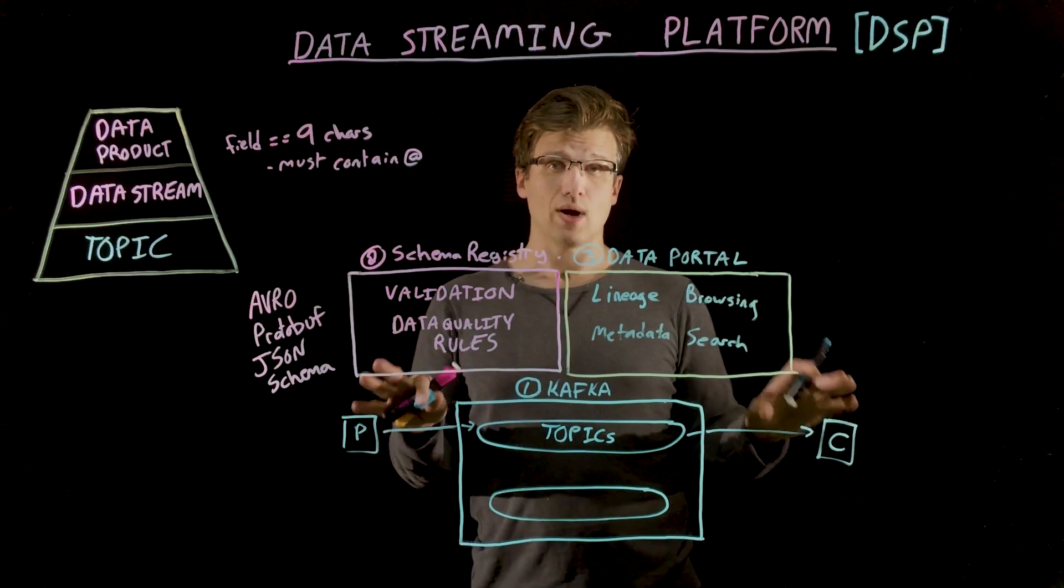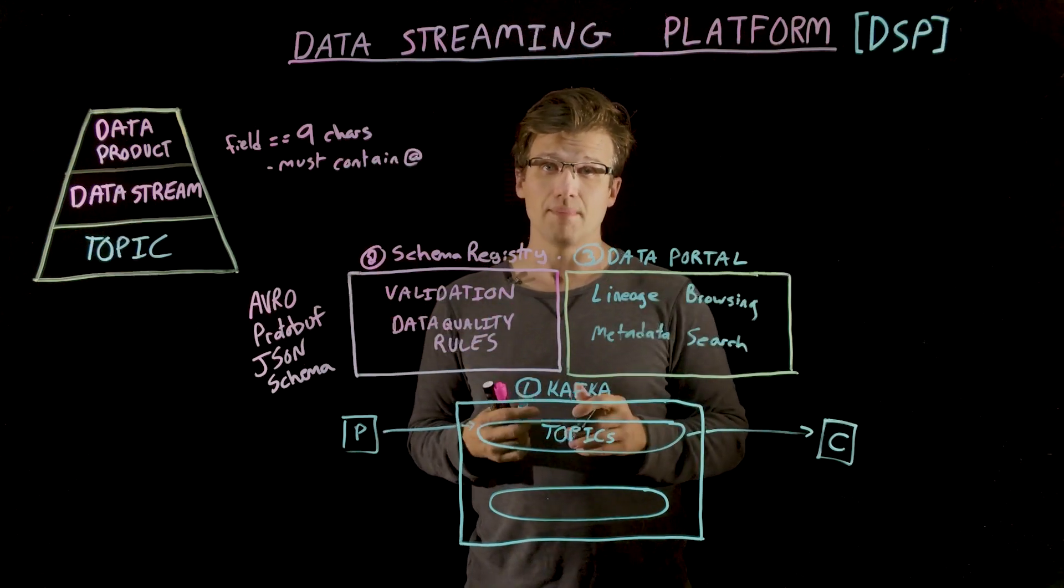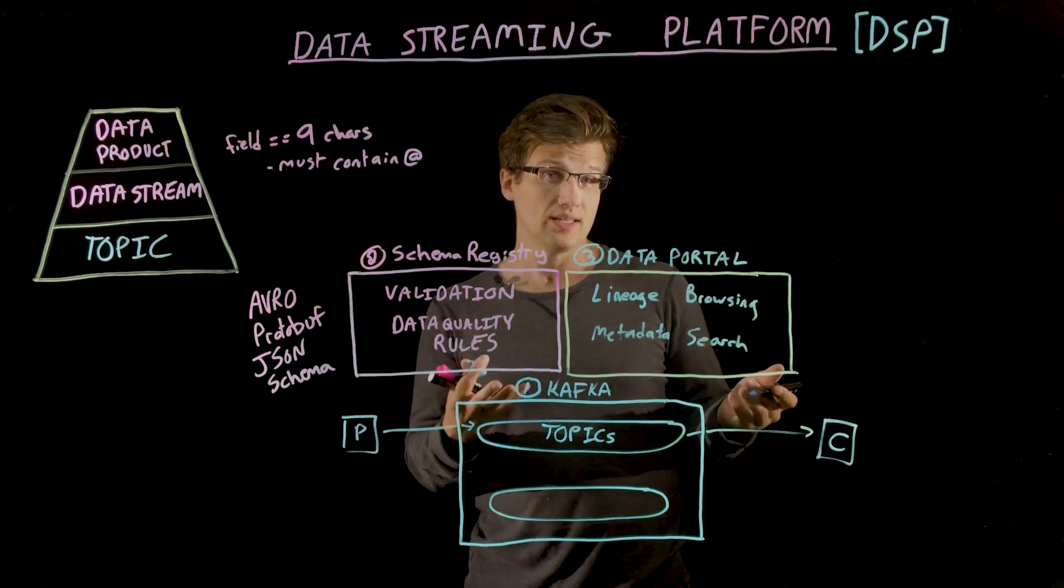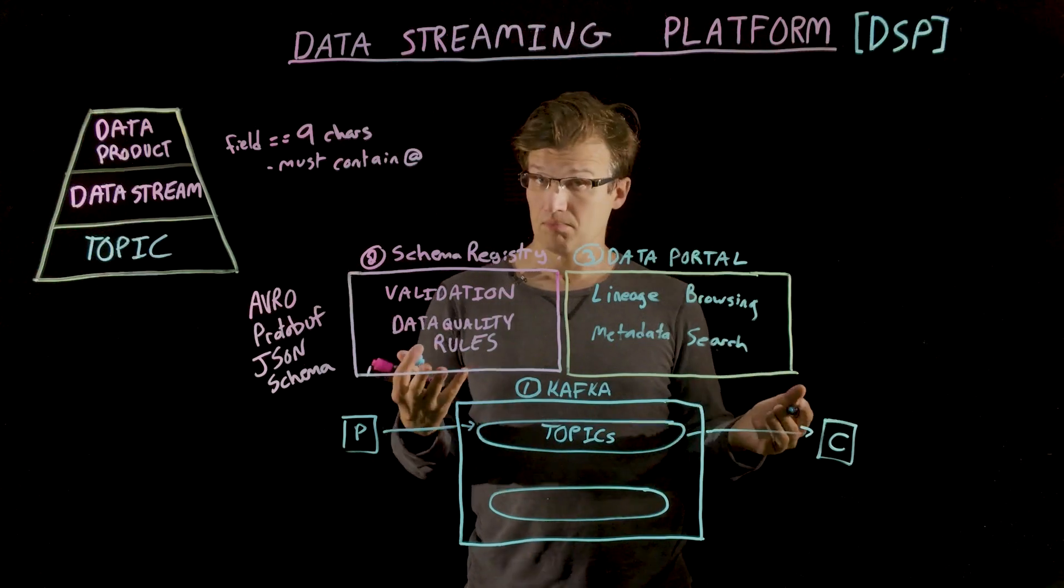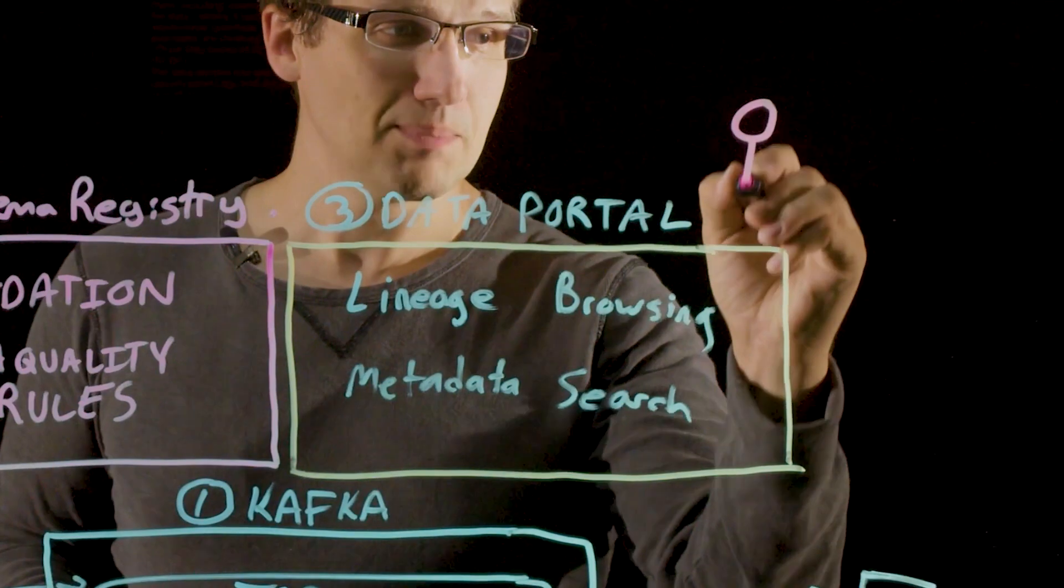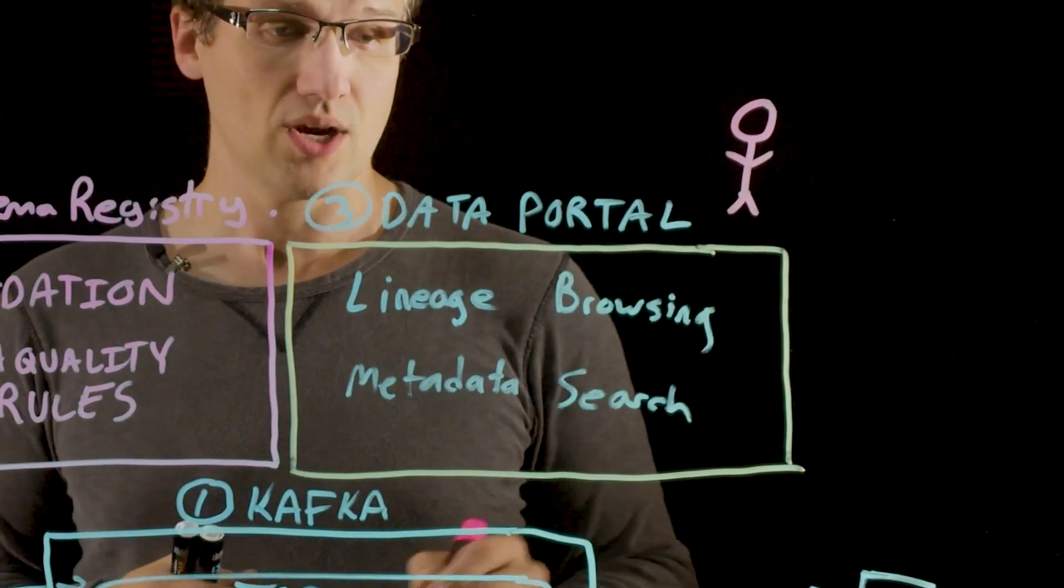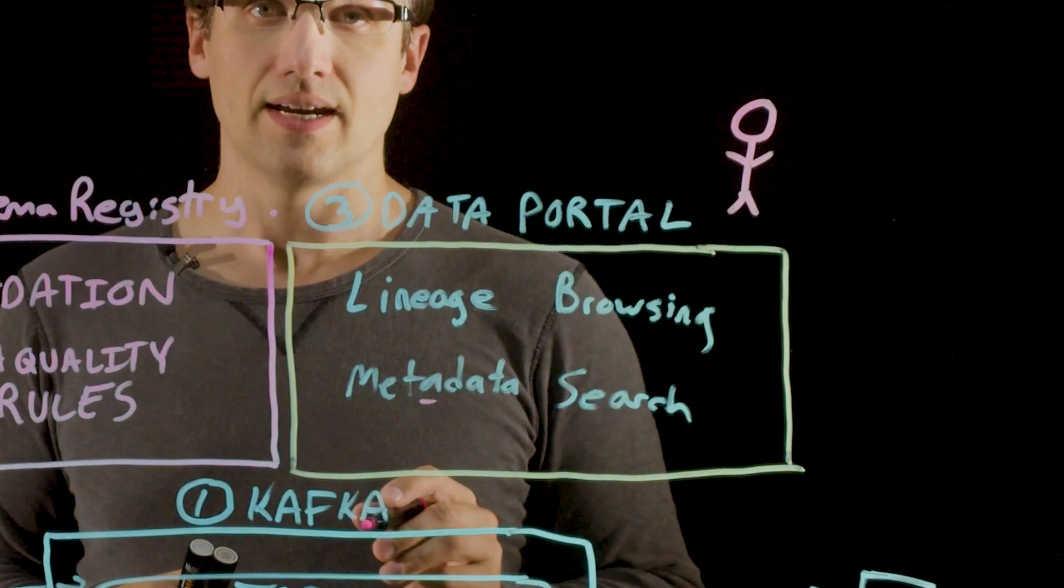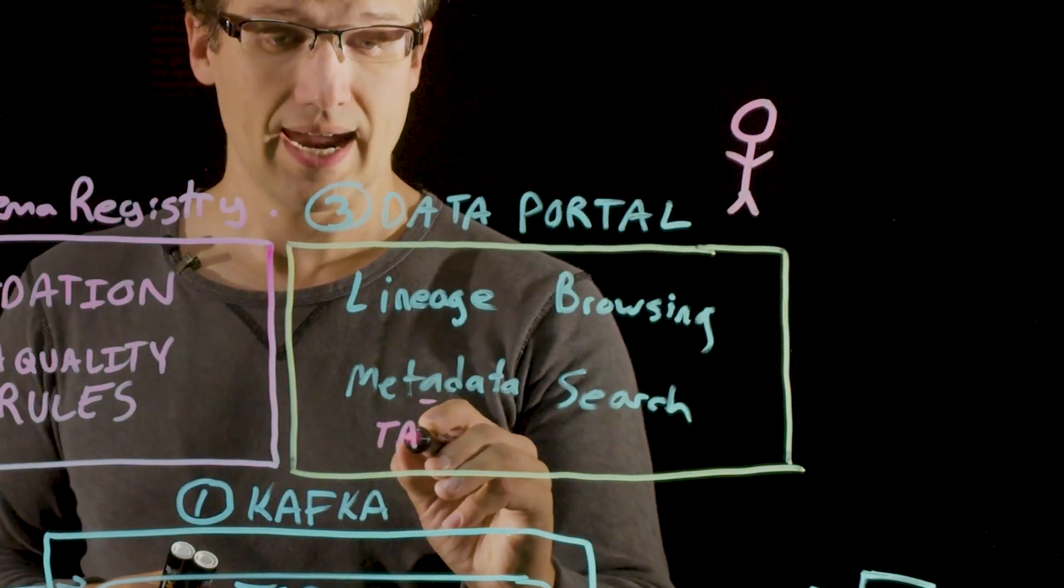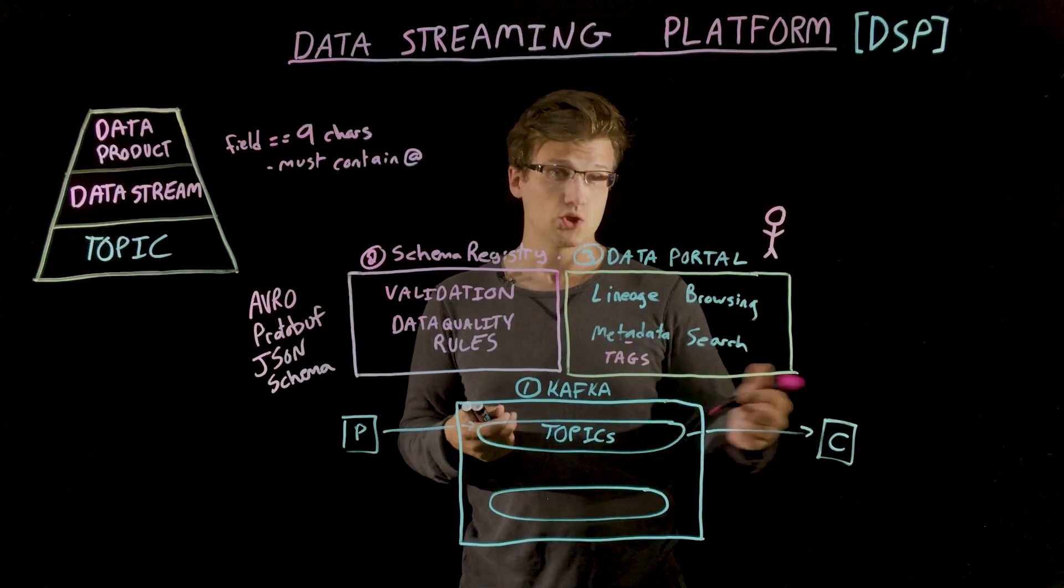Perspective users can browse and search through this portal to find the data assets that work for them, including viewing the ancestry of the data, where it came from, and which other processes are involved upstream. The data owners can specify the information in the data portal about their data products, such as the metadata or classification tags or other information that they would like to share with prospective users.